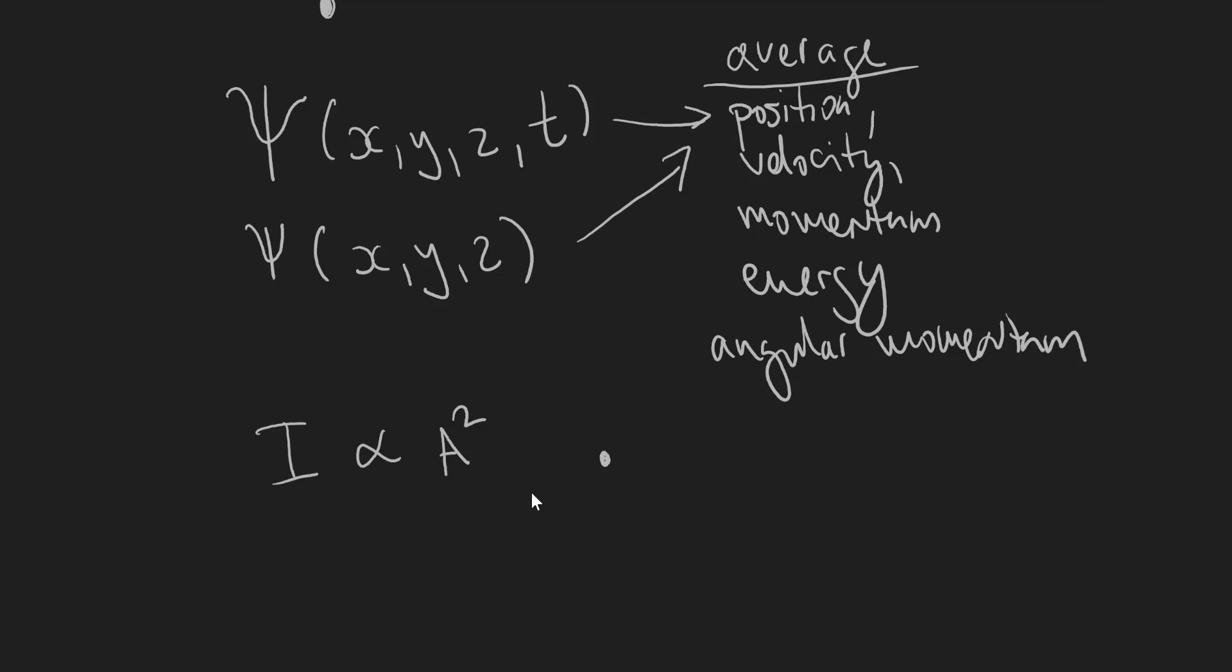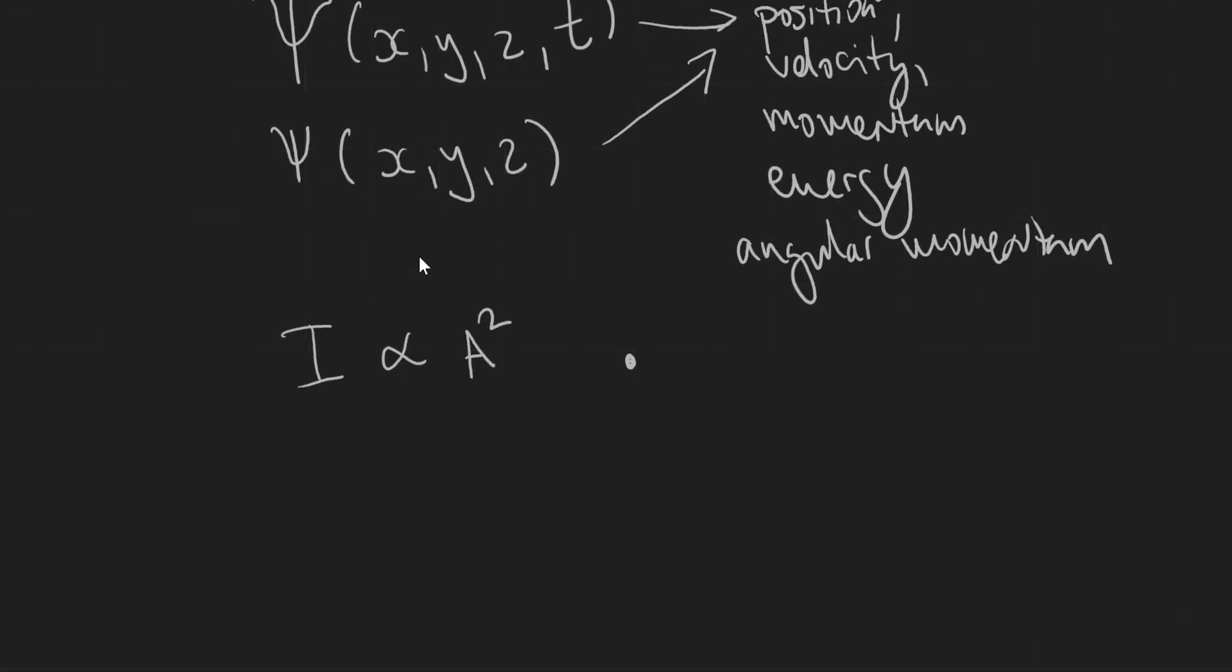Now in exactly the same way the square of the wave function of the particle tells us the probability of finding the particle around that point. A little bit more precisely though we need to say that we need to take the absolute value of the wave function.